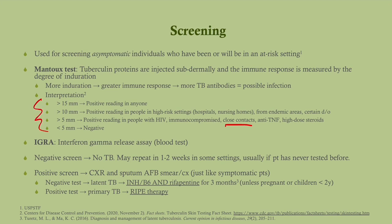You will need to know this for your exam. IGRA is a blood test — it's nice because you only need to go in once. With the Mantoux test you need to go in once for the injection and once to get it read, which is a pain. With the IGRA you only need to get tested once. A negative screen means no TB. A positive screen means you go on to get a chest x-ray and sputum, just like you would with somebody coming in with symptoms.